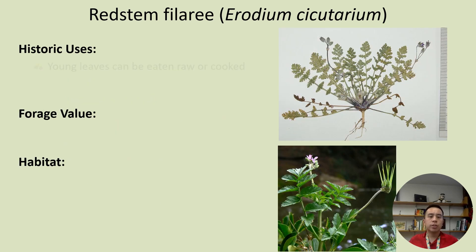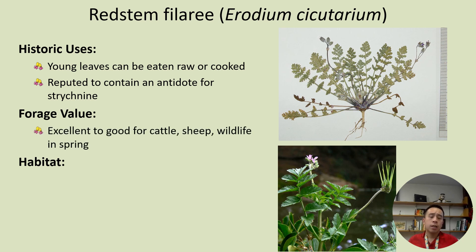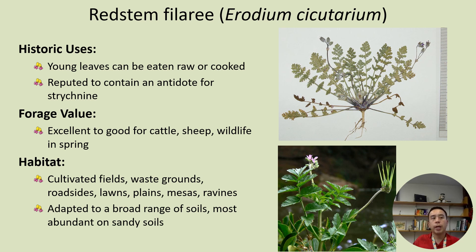Historically speaking, Erodium cicutarium's young leaves could be harvested and eaten both raw and cooked, and it was often indicated that compounds from this plant contain an antidote for strychnine poisoning, which is a toxic compound produced by other plants. For forage value, it's especially excellent forage for cattle, sheep, and wildlife, especially in the spring. It grows well in disturbed areas like cultivated fields, waste grounds, roadsides, lawns, mesas, ravines, and plains, and is adapted to a broad range of soils but occurs most abundantly on sandy soils.